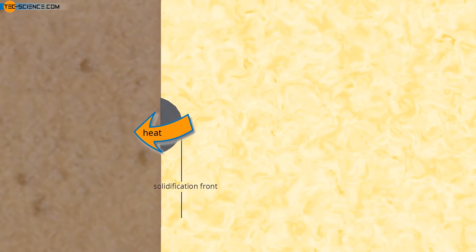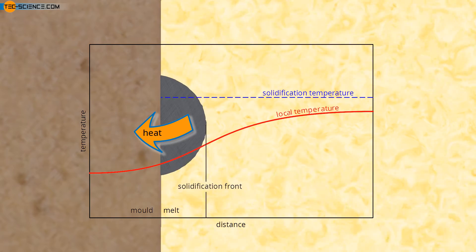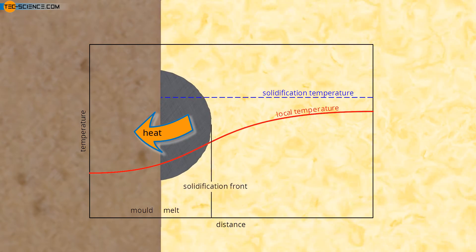If, for example, a nucleus forms on the surface of a mold wall, the heat of crystallization released at the growth front is often dissipated through the solidified crystal and then through the vessel wall. This is due to the fact that the melt generally has a higher temperature than the mold wall and heat dissipation ultimately always takes place in the direction of decreasing temperature.